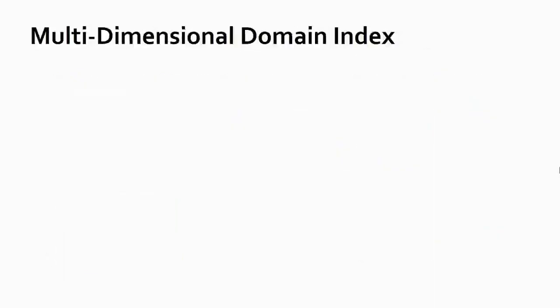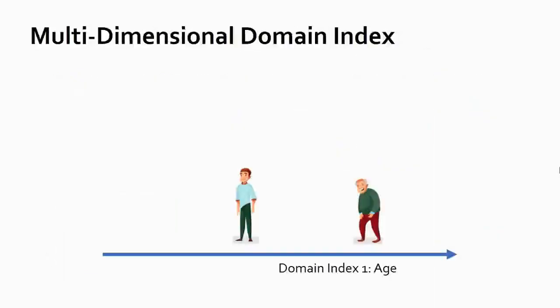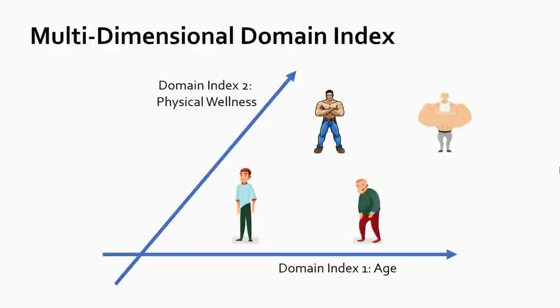So far, we only consider one-dimensional domain indexes, such as patient's age. In practice, there are often multiple factors affecting the domain shift, and therefore we can include more variables as domain indexes. So here we introduce the idea of multi-dimensional domain indexes. For example, besides age, patients' physical wellness can also affect their sleep quality. For patients of the same age, those with better physical health often have better sleep quality. Besides these two, there are more factors that can be considered, such as emotional wellness. Fortunately, our CIDA can be naturally extended to handle such multi-dimensional domain indexes.